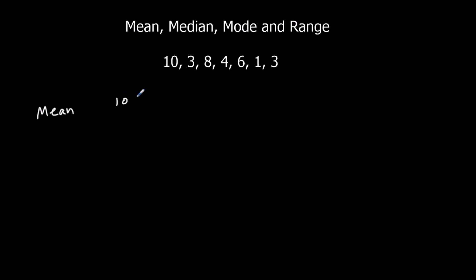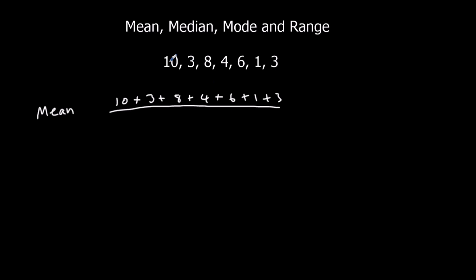So we have to add all the numbers up: 10 plus 3 plus 8 plus 4 plus 6 plus 1 plus 3, and divide it by however many there are. There are 7 numbers. They add up to 35. So it's 35 divided by 7, and that's 5. So the mean is 5.